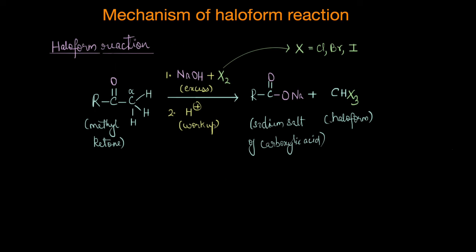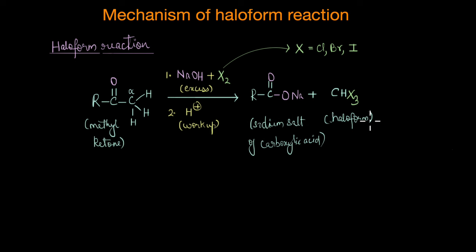In the haloform reaction, aldehydes and ketones that have at least one methyl group attached to the carbonyl carbon — basically those compounds that have a COCH3 group — are oxidized by halogens in the presence of a strong base to form the sodium salt of the corresponding carboxylic acid and haloform. On acidic workup we get the corresponding carboxylic acid. Note that the reagents are taken in excess, and the product has one carbon atom less than the starting reactant.